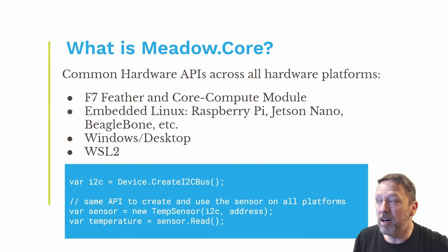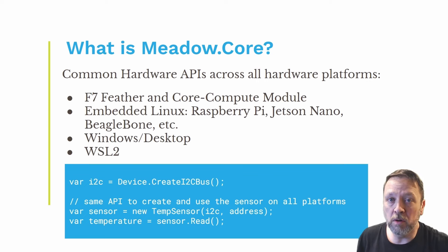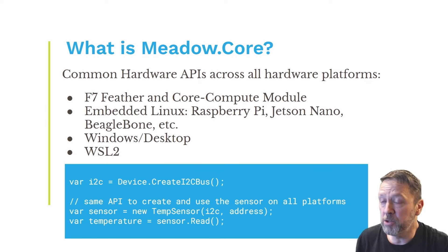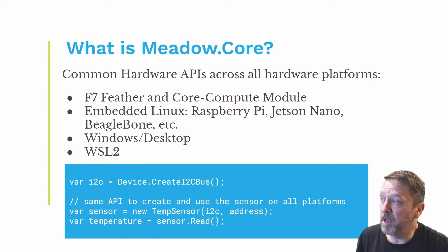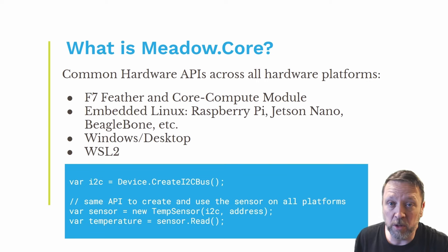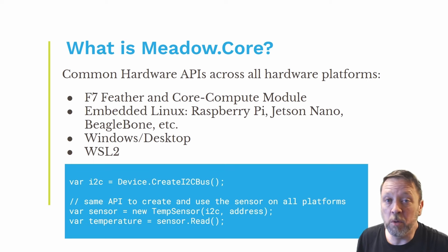MeadowCore provides a common hardware API across all different types of platforms. We support our own F7 Feather and Core Compute module, which are based on the STM32, but we also support common and popular embedded Linux platforms like Raspberry Pi, Jetson Nano and AGX, the BeagleBone Black. We support the Windows desktop, and we even support WSL2.